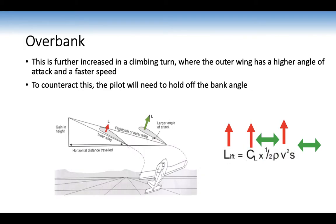Overbanking is further increased in the climbing turn, where the outer wing has both a higher angle of attack and faster speed. To counteract this, the pilot needs to hold off the bank angle. We'll see this in flight — in a climbing turn and medium level turn, you'll need to hold off to maintain the specific angle of bank.